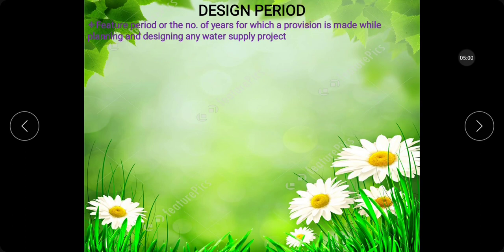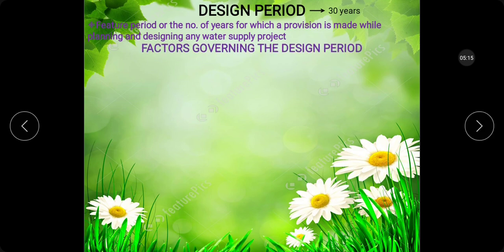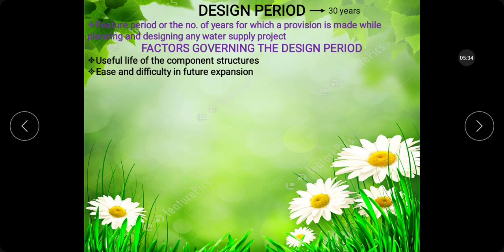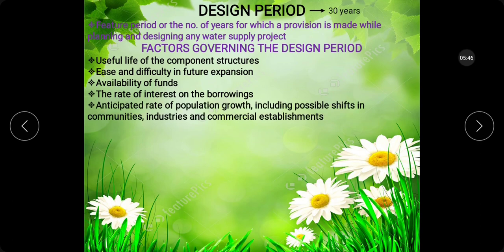Most water supply projects are designed for a period of about 30 years. The factors governing the design period are: useful life of component structures, ease and difficulty in future expansion, availability of funds, rate of interest on borrowings, and anticipated rate of population growth including possible shifts in communities, industries, and commercial establishments.